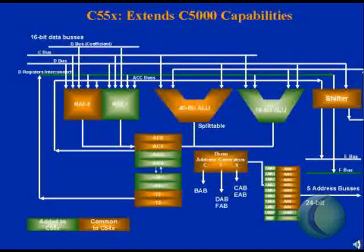The 5-5X has two ALUs: a 40-bit ALU, very similar to the ALU on the 5-4X, plus a 16-bit ALU which will facilitate Boolean operations and additional bit manipulation in parallel with other MAC and ALU operations. The 5-5X also has a barrel shifter, similar to the 5-4X's, but it drives two output buses — the E bus and the F bus.